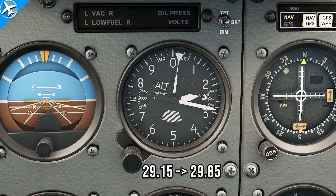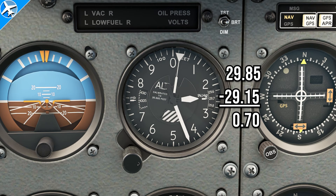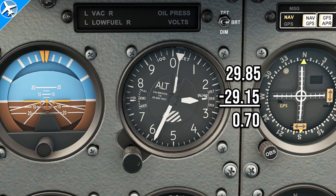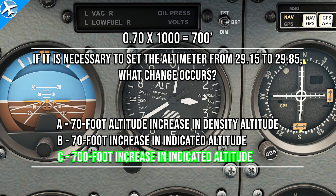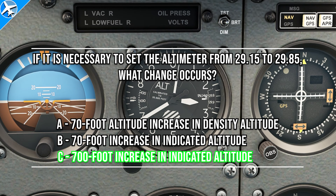We know the altimeter is going to indicate higher — by how much, we need to do some math. The difference in these two pressures is 0.7 inches of mercury. Multiplying 0.7 times 1,000 gives us 700 feet, for a 700-foot increase in indicated altitude. Those are the basics of setting an altimeter and two FAA private pilot written test questions.